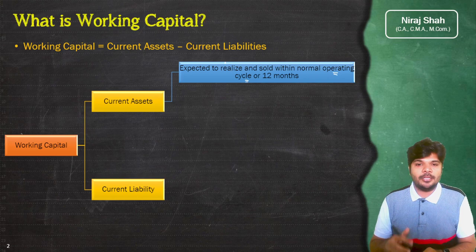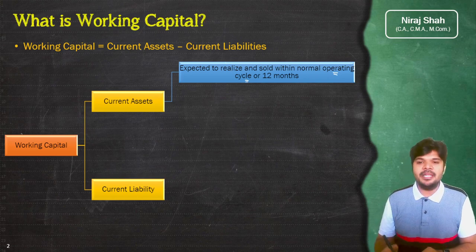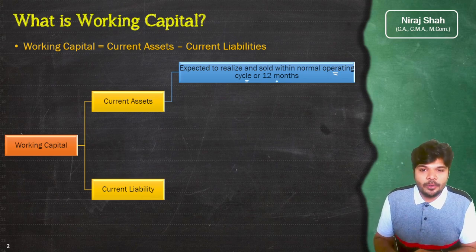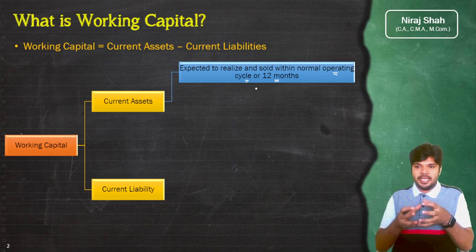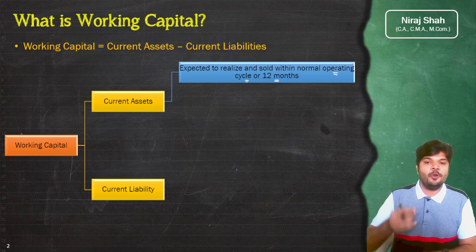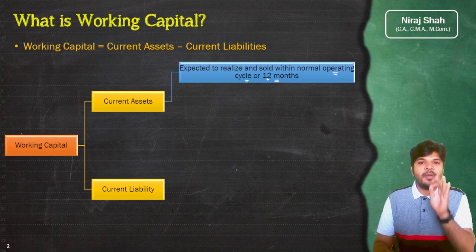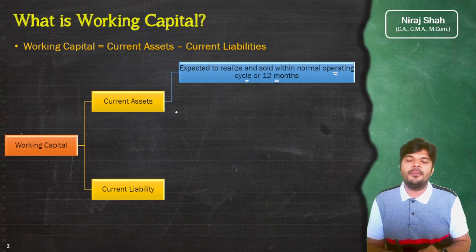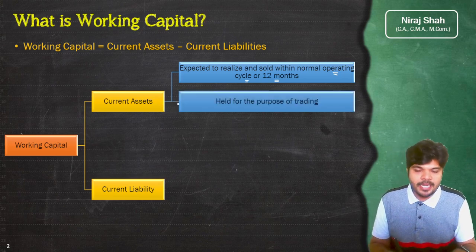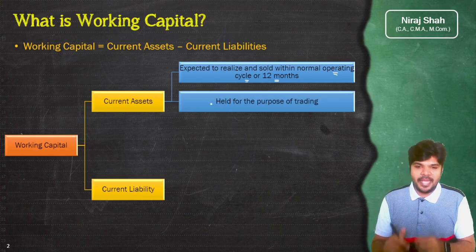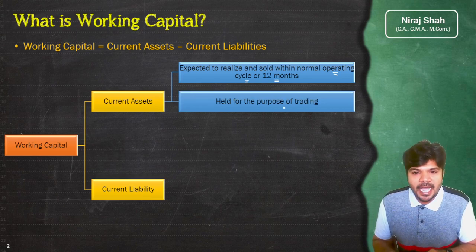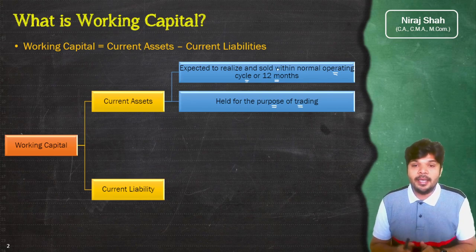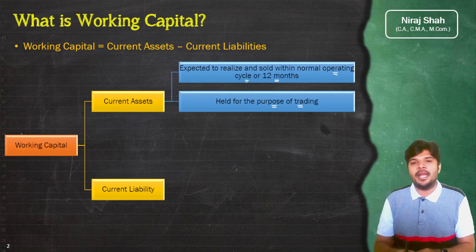यह जो asset है, या तो वो sell हो जाएगी या तो इसका पैसा हमें मिल जाएगा, और यह सब होगा normal operating cycle में ही, या तो जिस date से यह asset बनी है, उस date से 12 months के अंदर-अंदर current asset का पैसा हमें मिल जाता है। यह asset जो आपने balance sheet में hold करके रखी होती है, वो trading के purpose से होती है।